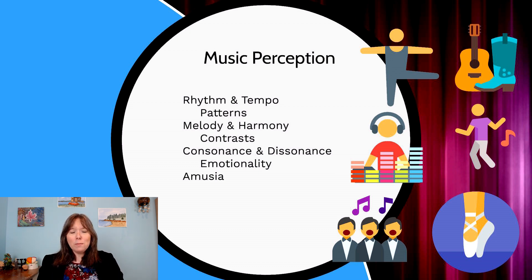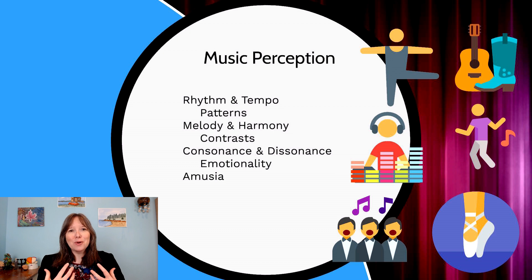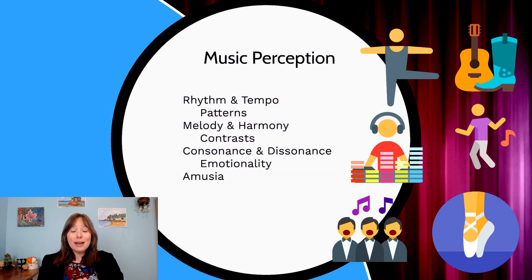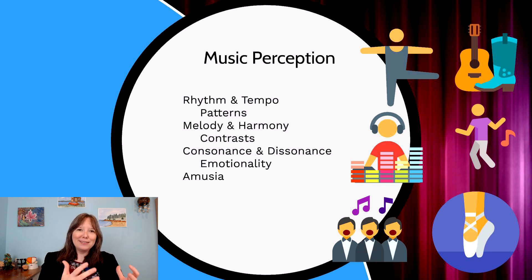In music we also have consonance and dissonance. Although they've never been formally defined, they describe the emotionality of music. Consonance is often considered a chord that sounds sweet — two notes played together that create a happy emotionality. Dissonance is a type of displacement in the notes that gives a jarring sense. We hear more dissonance in horror films and more consonance in romance, and they each convey a distinct emotionality.